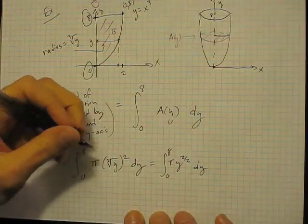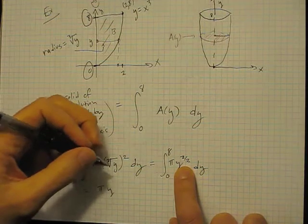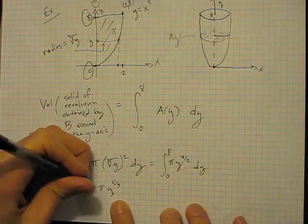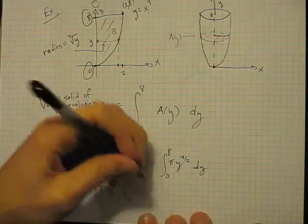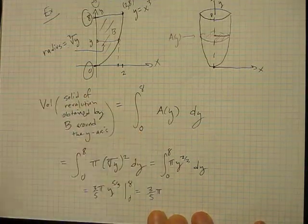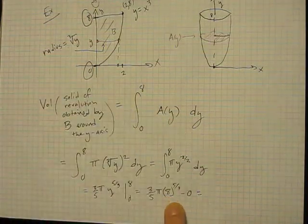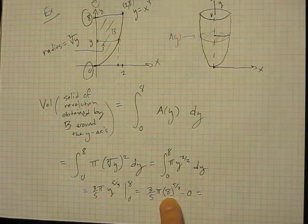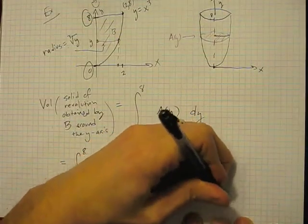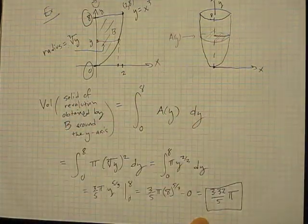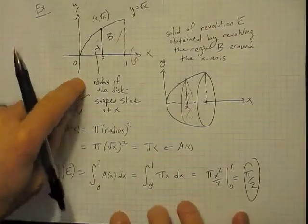Integrating π·y^(2/3): raise the exponent by 1, giving y^(5/3), and divide by 5/3 — the same as multiplying by 3/5. Evaluated from 0 to 8 we get (3/5)·π·8^(5/3). Since 8^(1/3) = 2, we get 2⁵ = 32, so the answer is 3·32π/5 = 96π/5.